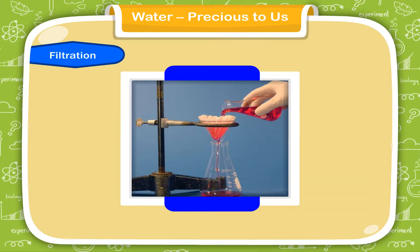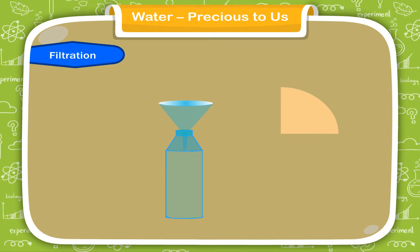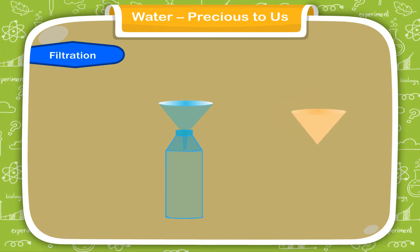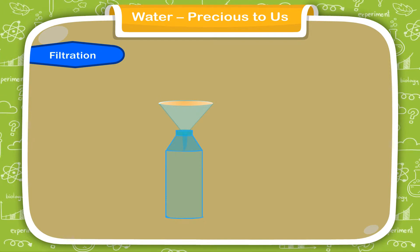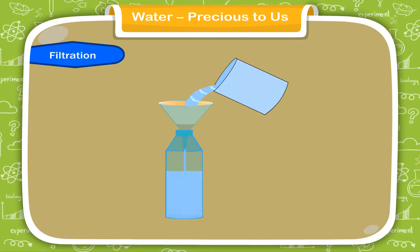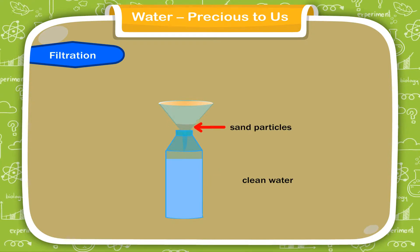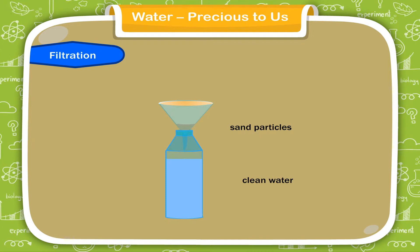Filtration: insoluble impurities can be removed by the process of filtration. Fold a sheet of paper into half and then into quarters — it takes the shape of a cone. Place it in a funnel, then place the funnel with the conical filter paper inside the mouth of a bottle. Pour a mixture of sand and water into the funnel. Clean water collects in the glass and sand particles stay on the filter paper.